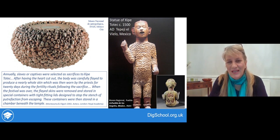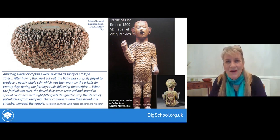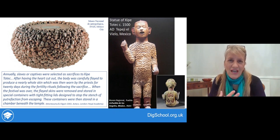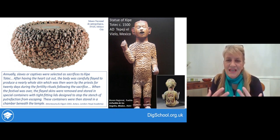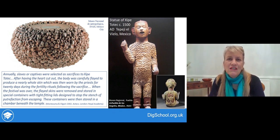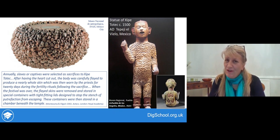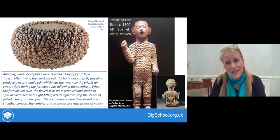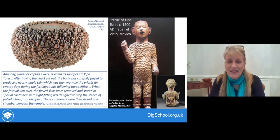Reading through that description, talking about the sacrificial victim having their heart removed, then the skin removed, and then the priests wore the skin for 20 days during a series of fertility rituals. That really rather unpleasant skin was then put in a sealed container, a tightly sealed container, and then that container was buried in the temple dedicated to Chepetotec.